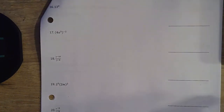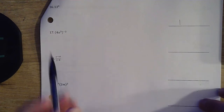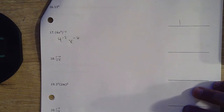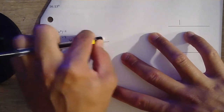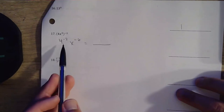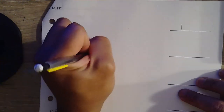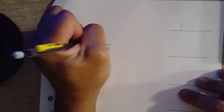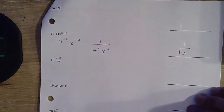Question 16: 13 to the 0 power — anything raised to the 0 power is just 1. Easy one. Next one — question 17 — we distribute the negative 2 to each of those. So 4 to the negative 2nd power. 3 times negative 2 gives us x to the negative 6th power. We don't want negative exponents, so make a fraction. 4 to the negative 2nd power goes down in our denominator. x to the negative 6th power also goes down. 4 squared is 16. So our final answer is 1 over 16x to the 6th power.